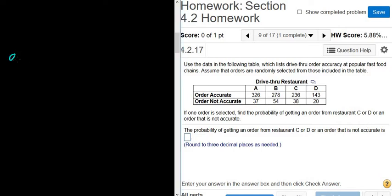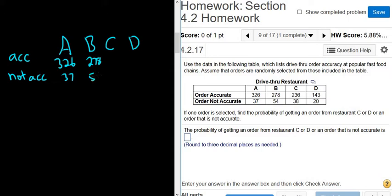I'm going to go ahead and copy down the table over here. So we have accurate, not accurate, A, B, C, D. So 326, 37, 278, and you don't have to write down the table. I'm only doing it just to show you something really cool. So 143 and 20.